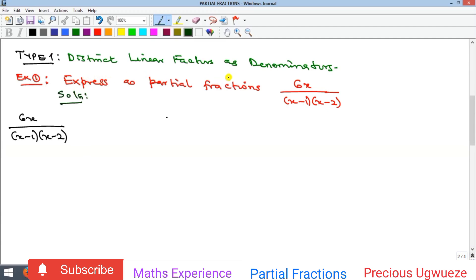There are two linear factors here as denominators. Please note the number of linear factors you have will tell you the number of partial fractions you will obtain when you split it into partial fractions.